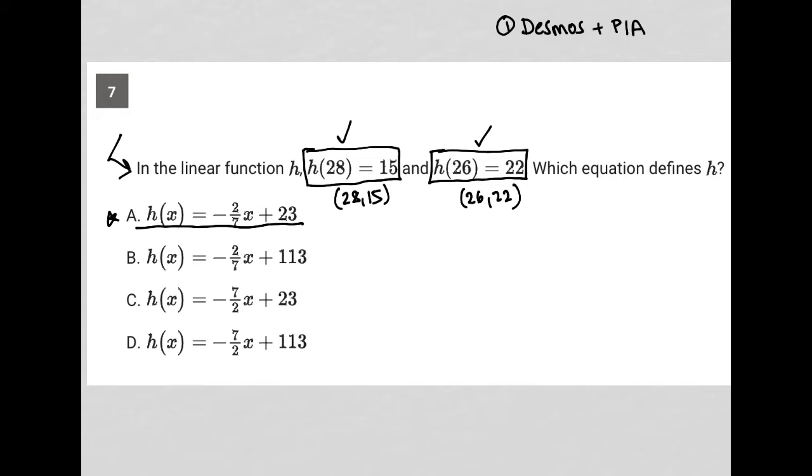And we'll see that only one of these answer choices gives us both of those points on its graph. So that would be the most, I think that probably is the fastest, most efficient way to get there.